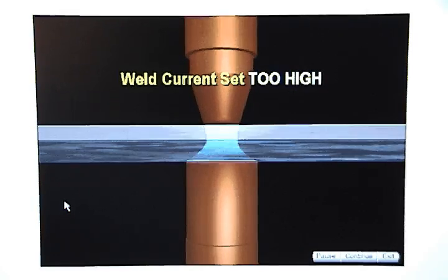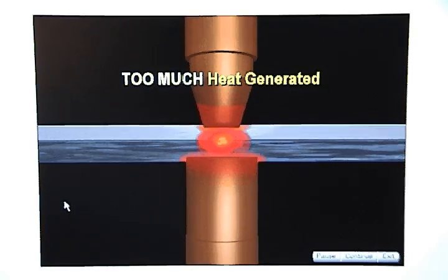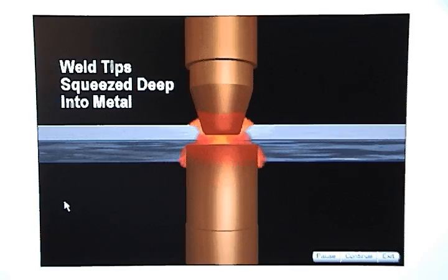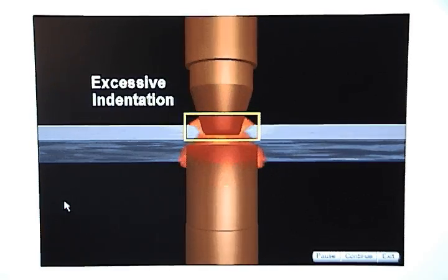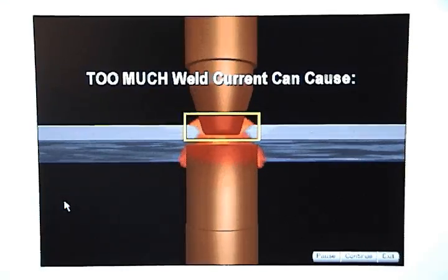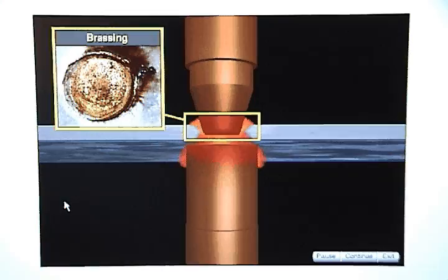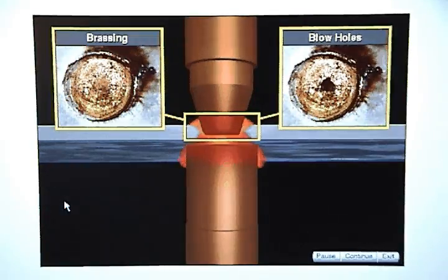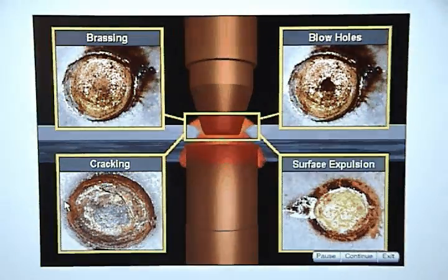If weld current is set too high, too much heat will be generated, and the weld tips will be squeezed deep into the metal and cause excessive indentation. Too much weld current can also cause brassing, blow holes, cracking, and surface expulsion.